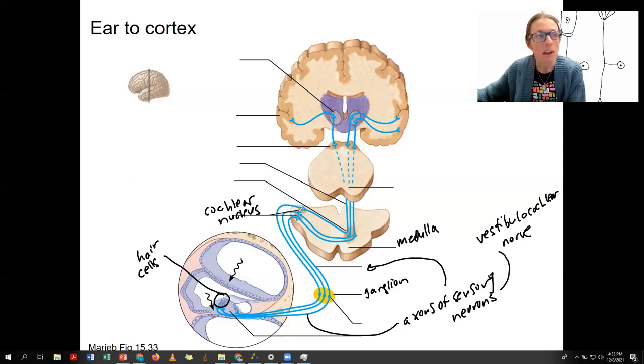The information then goes across. This is another nucleus. This is the superior olive, the olivary nucleus. This is right at the pons and medulla junction.